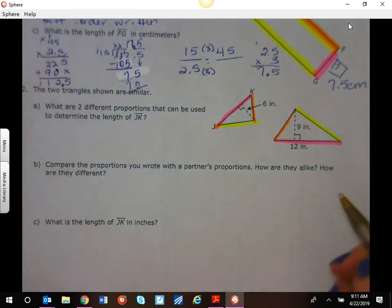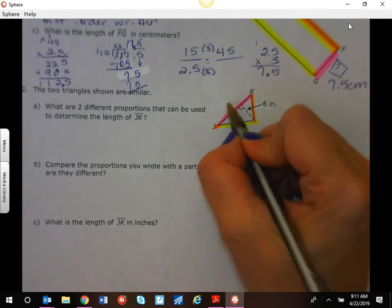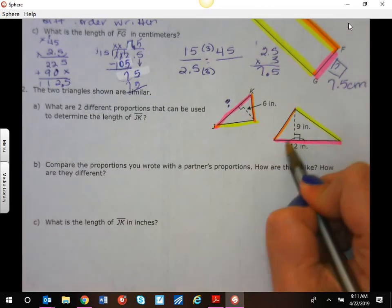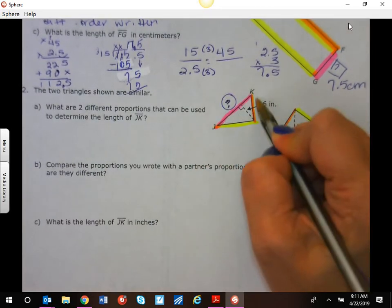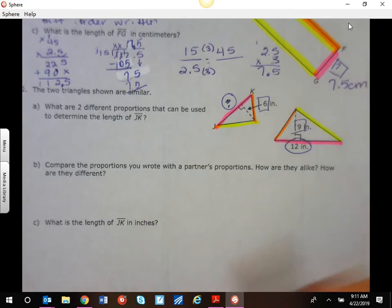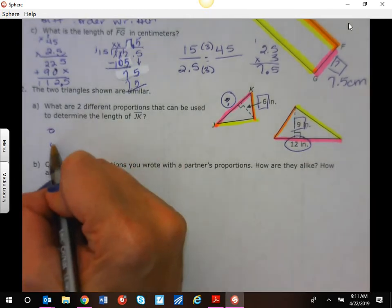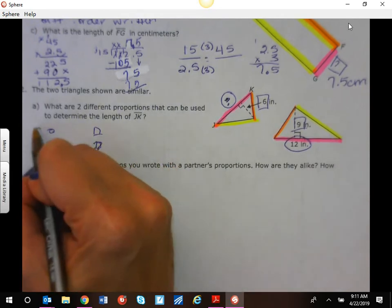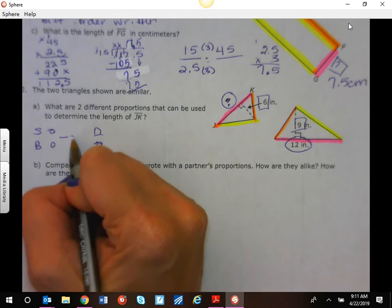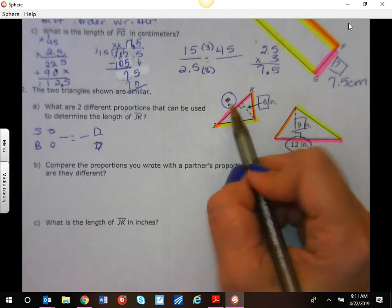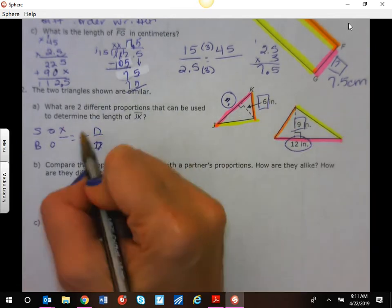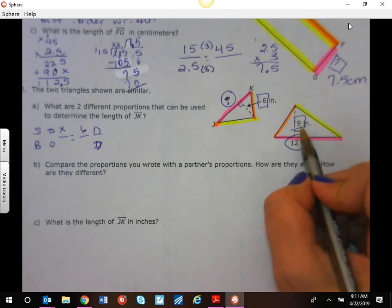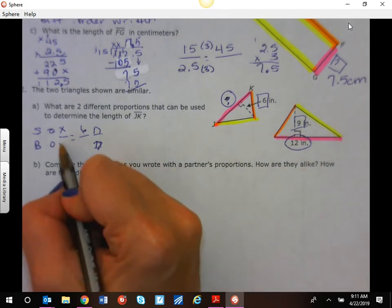Two different proportions. Well, I need to find this piece. So I can still stick with my circles and my squares. Again, we can do circles and squares where we have small shape on top, big shape on bottom. So something is equal to something 6. And then we have 12 and 9.